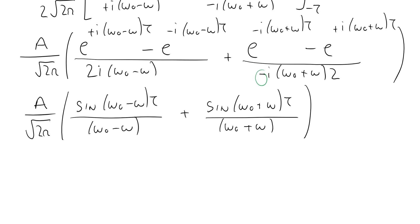We introduce a factor of tau in the numerator and denominator of each term so that we have two sinc functions.